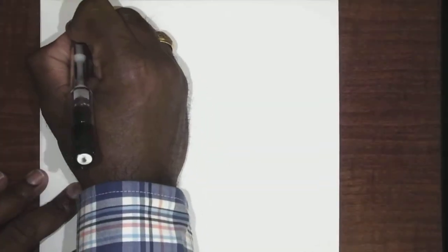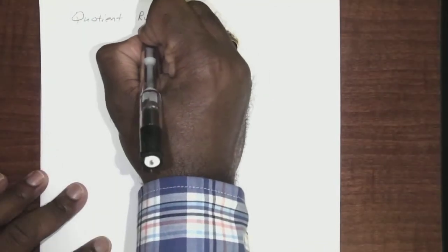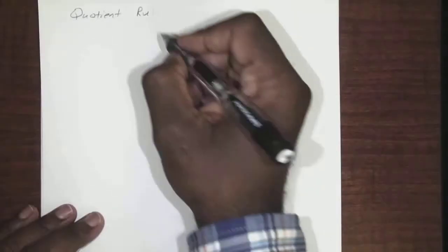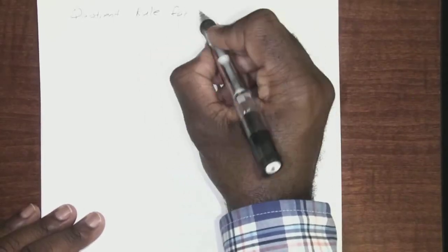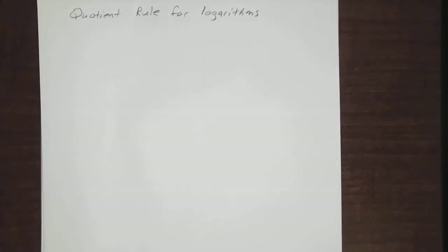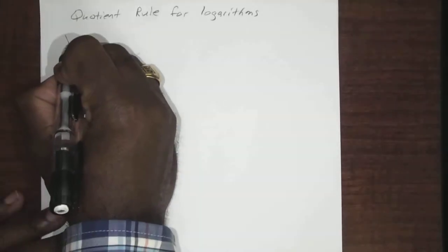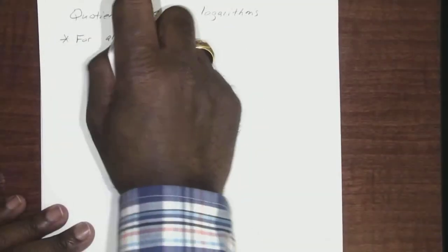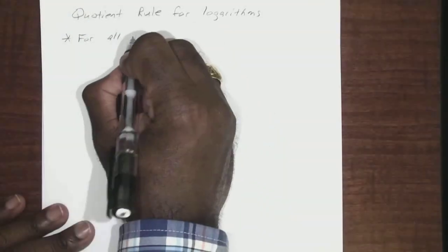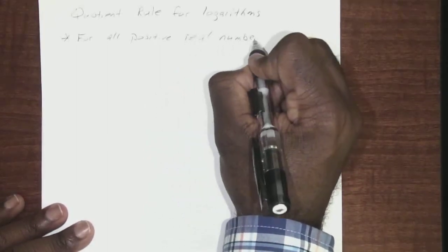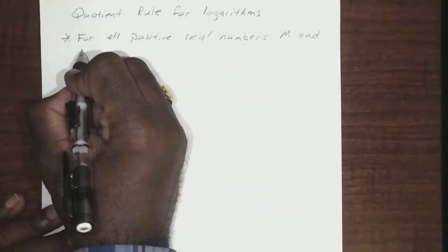All right. Now we're going to look at the quotient rule. Quotient rule for logarithms. So again, we're just looking for all positive real numbers. And we'll make it m and n.